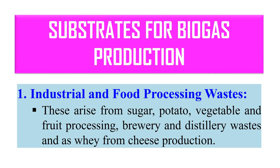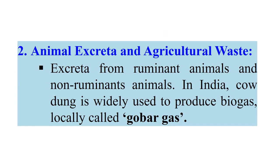What are the substrates that can be used? Any kind of organic waste or material can be used, and they generally originate from three sources. The first is industrial and food processing waste, which arises from sugar beet washing water, potato, vegetable, and fruit processing, brewing and distilling waste, and waste from cheese production.